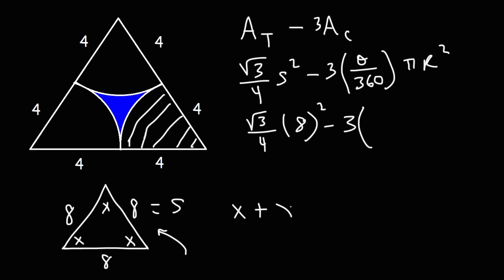x plus x plus x must equal 180. So 3x equals 180. Divide both sides by 3, we get x equals 180 over 3 which is 60 degrees. So the angle for each sector is 60.